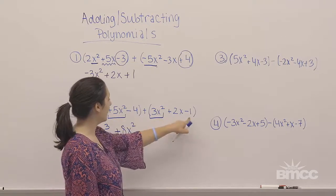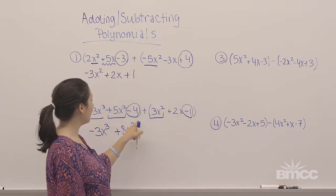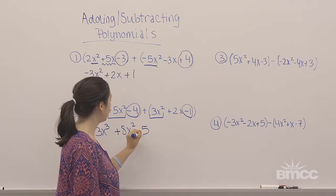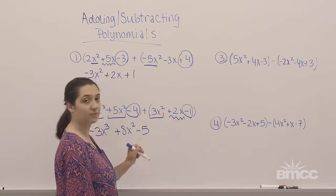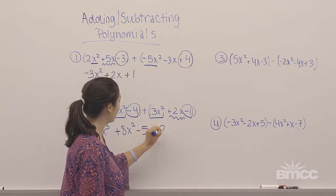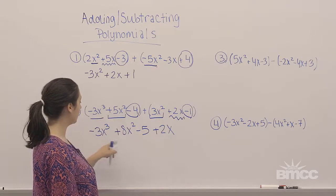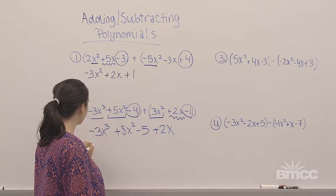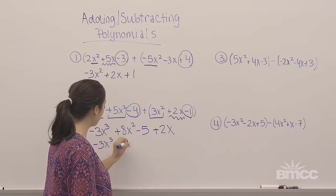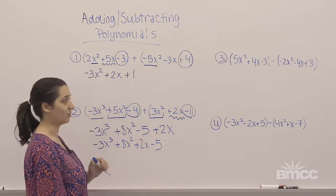Negative 4 and negative 1 are like terms because they are both constants, so negative 4 plus negative 1 is negative 5. I also have positive 2x in the second polynomial, so I rewrite positive 2x. In descending power order, my final solution is negative 3x cubed plus 8x squared plus 2x minus 5.